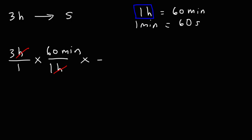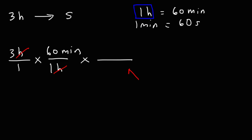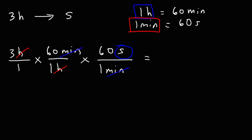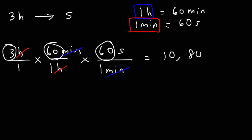Our next step is to convert from minutes to seconds using this conversion factor. Notice that we have the unit minutes on top, so we want to put one minute on the bottom — one minute for every 60 seconds. The unit minutes cancel, leaving us with the unit seconds. We multiply the numbers on top: 3 times 60 times 60. That's 60 times 60 equals 3,600, times 3.